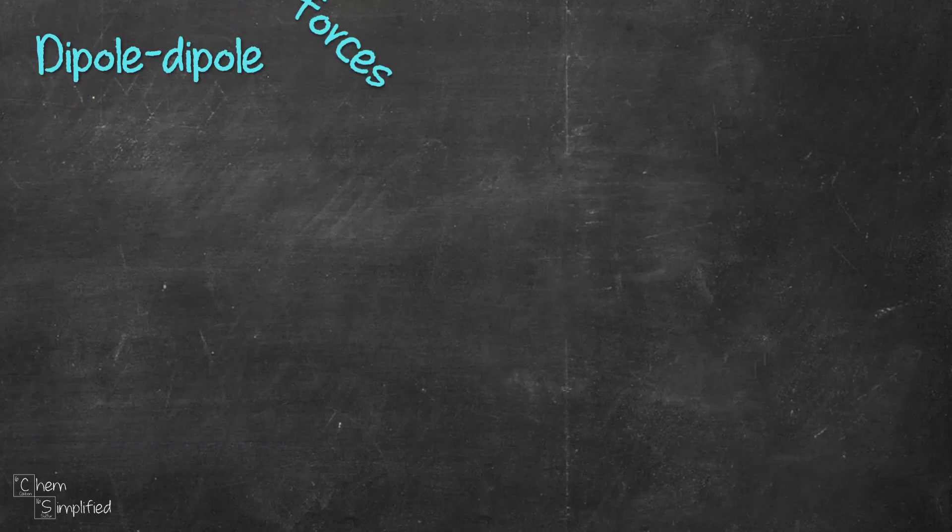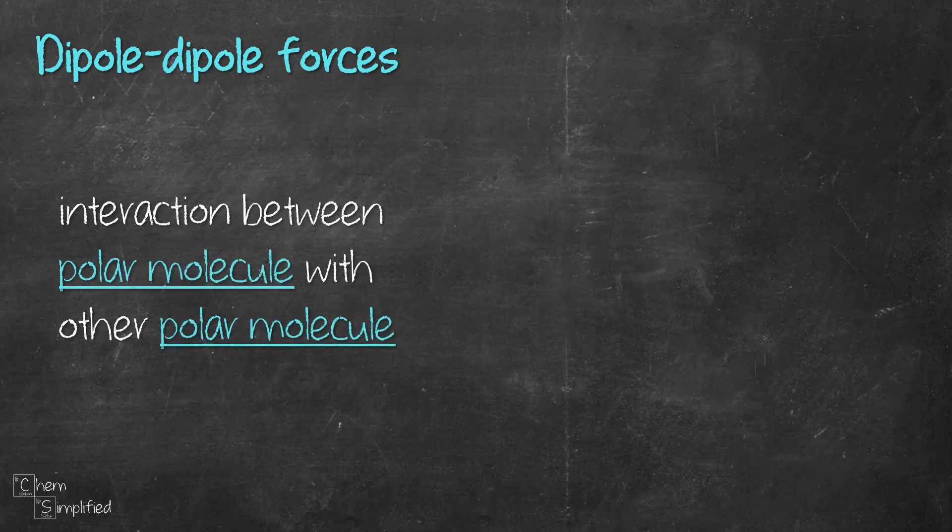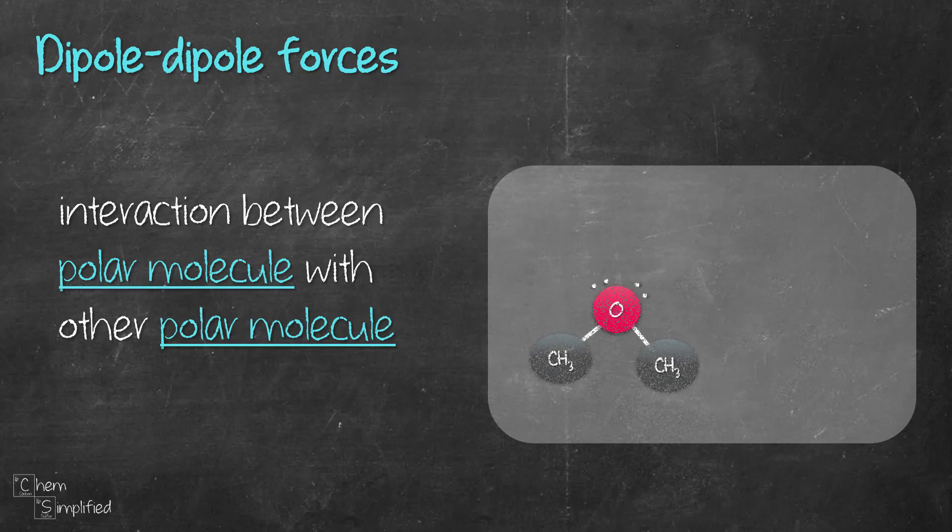Next, we move on to dipole-dipole forces or dipole-dipole interaction. It's basically an interaction that is present in polar molecules. Let's say we have an ether, dimethyl ether CH3OCH3. It's a polar molecule because there's a permanent dipole within the molecule.